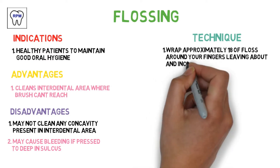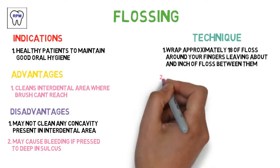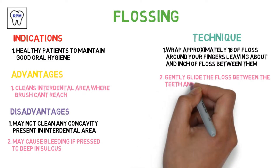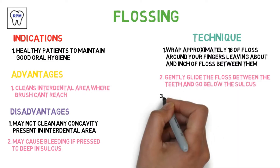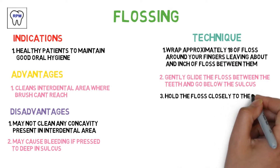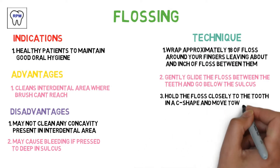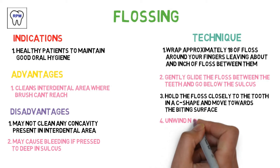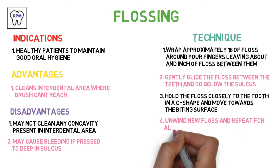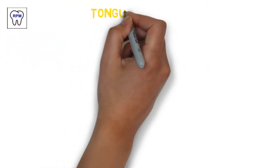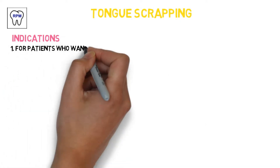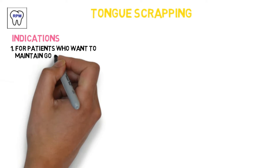Technique: Step 1 — wrap approximately 18 inches of floss around your fingers, leaving about an inch of floss between them. Step 2 — gently glide the floss between the teeth and go below the sulcus. Step 3 — hold the floss closely to the tooth in a C shape and move toward the biting surface. Unwind new floss and repeat for all teeth.